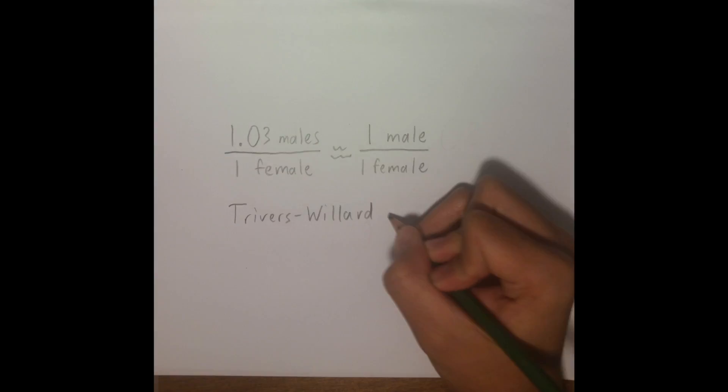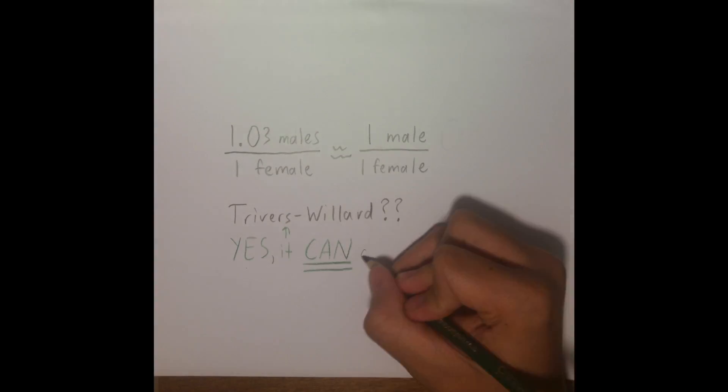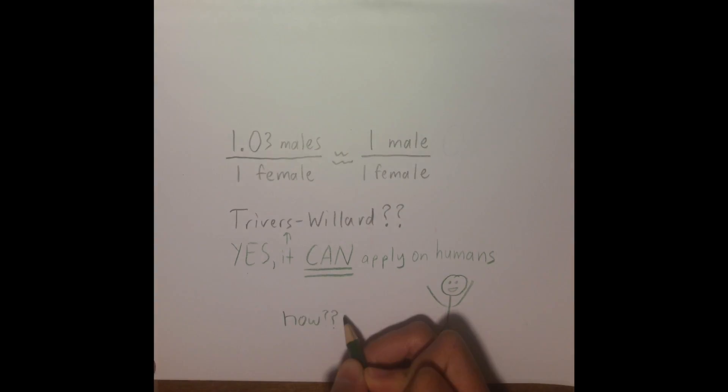So it's not exactly a 1-to-1 ratio for humans, but it's pretty darn close. Is this indication of the Trivers-Willard hypothesis applicable to humans? Multiple experiments have found that yes, the Trivers-Willard hypothesis can apply to human populations. If this is the case, what factors have been found to affect the sex ratio at birth of human populations?